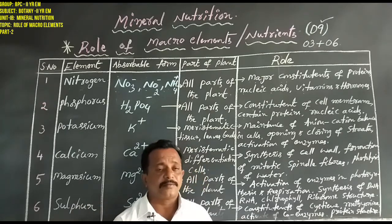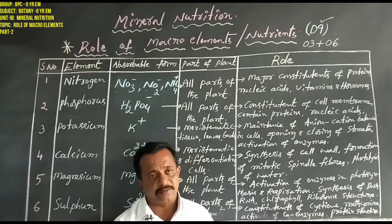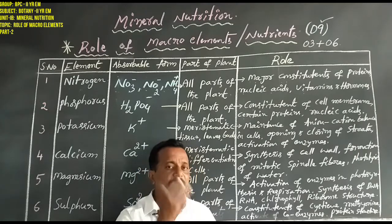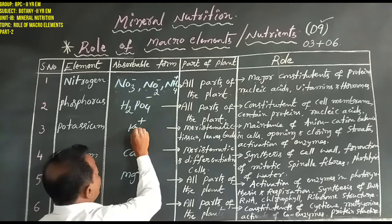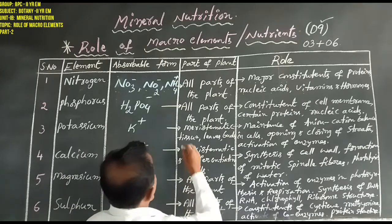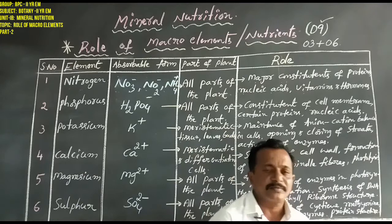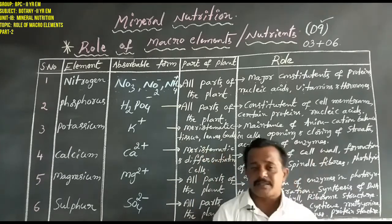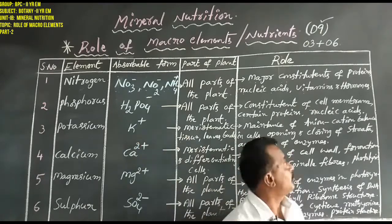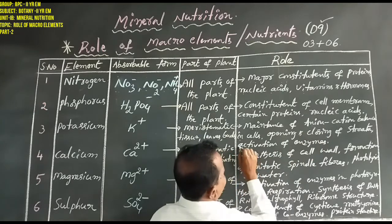Nitrogen and phosphorus are both very essential elements and play a similar role. The third macro element is potassium. Potassium is absorbed in ionic form as K⁺ and is concentrated in meristematic tissues, leaves, and buds. Its roles include maintenance of anion-cation balance in cells, opening and closing of stomata, and activation of enzymes.